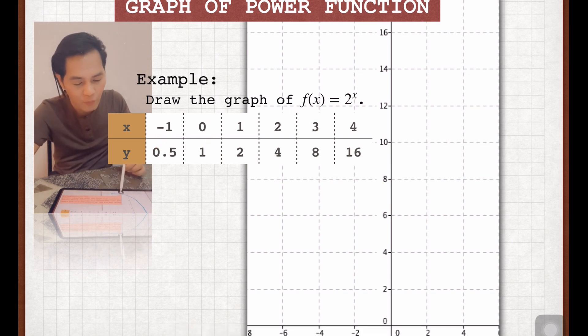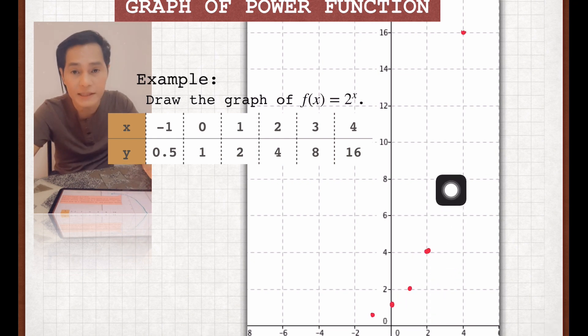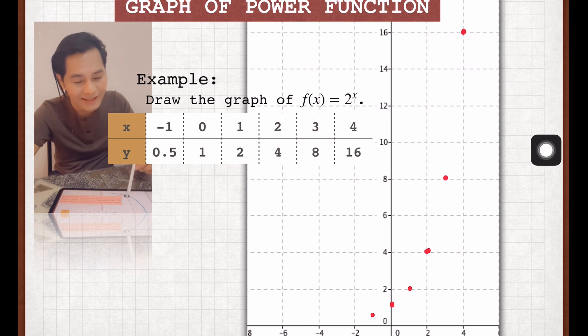So we have (-1, 0.5), (0, 1), (1, 2), (2, 4), (3, 8), and (4, 16). After that, we are going to connect the dots smoothly.